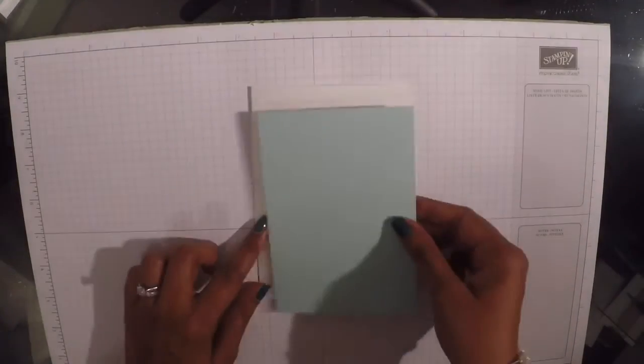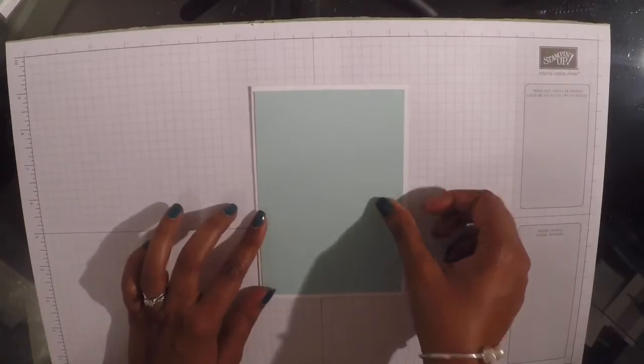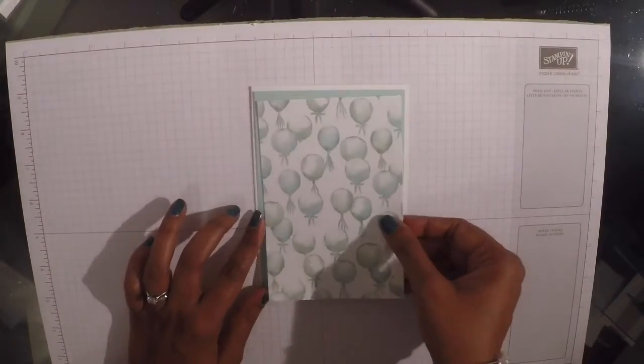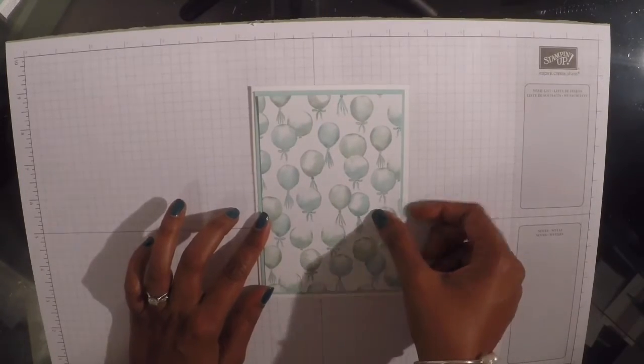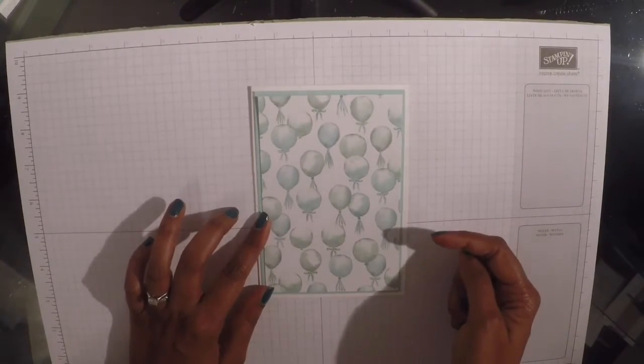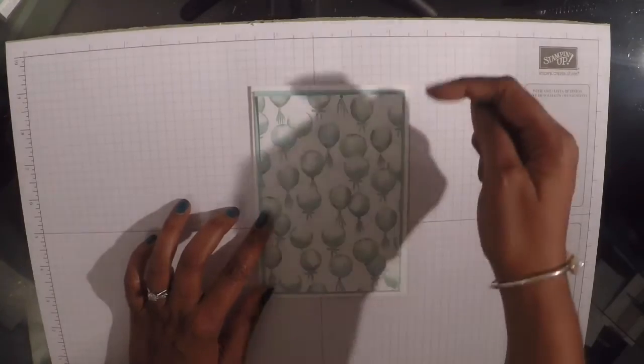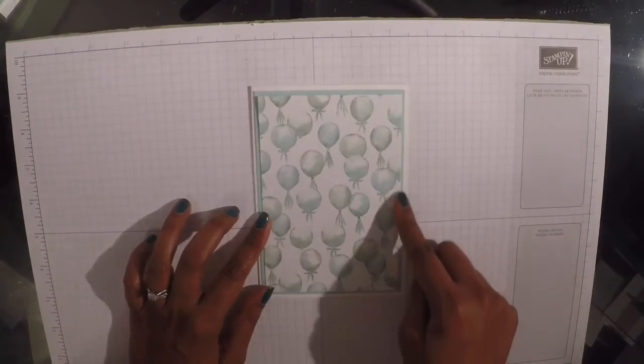That's going to be layered with a piece of Pool Party and this time I'm going for this gorgeous balloon design paper from that paper stack, and all the layers have just been cut in by a quarter of an inch. That way and that way. So you just get this lovely even border all the way around.